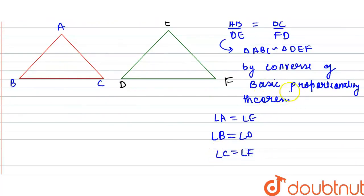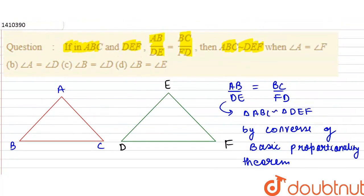So by Converse of Basic Proportionality Theorem, we can say that the three angles are corresponding. This is the condition of Converse of Basic Proportionality Theorem.